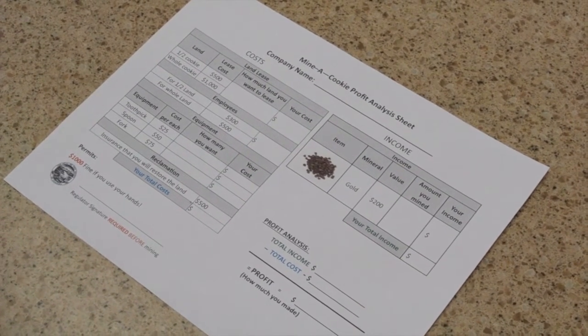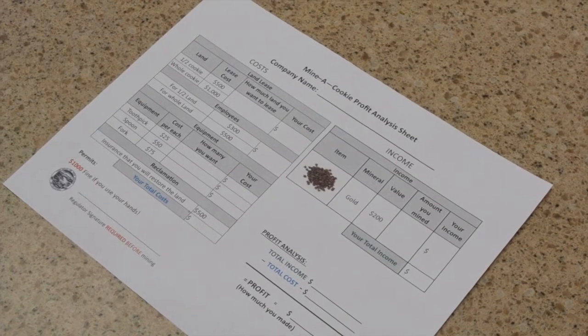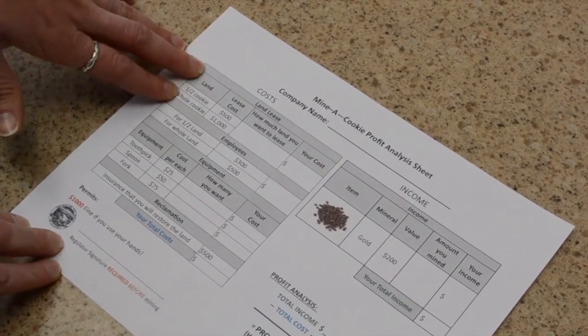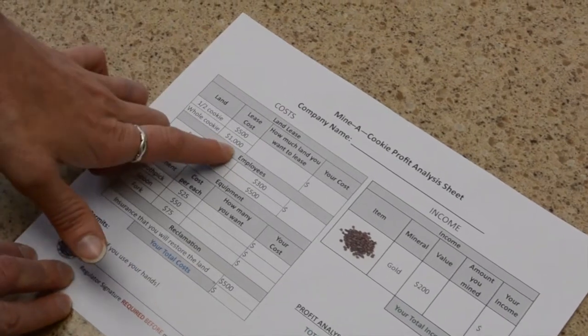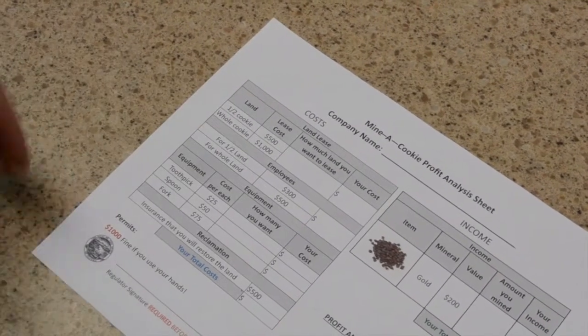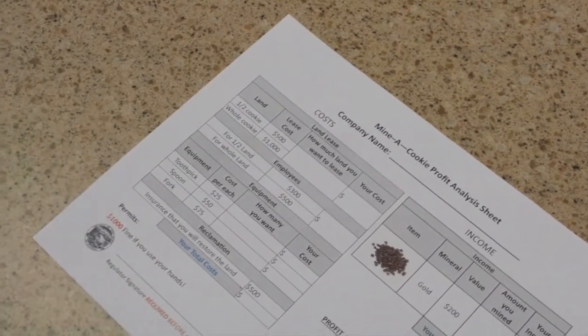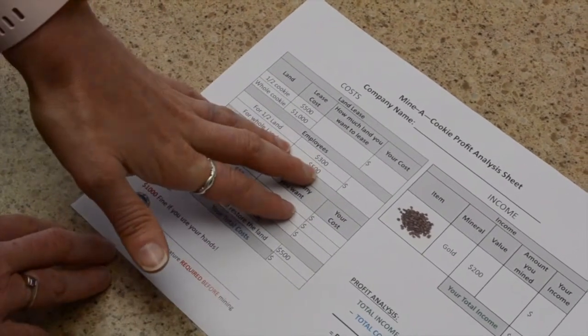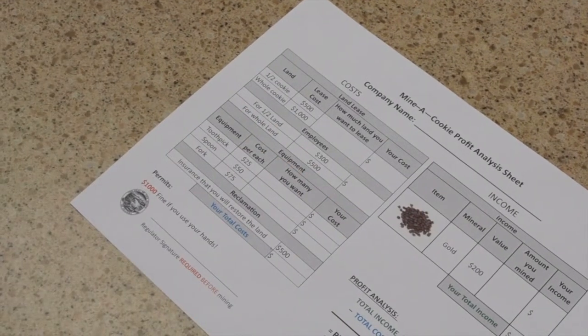Then we talk about land. Obviously they need land to mine on. So with their land, they can either mine half of their cookie or their whole cookie. Obviously it costs more if they want their whole cookie, but it increases their chances of finding more minerals. Then they have to pay employees. So the bigger the project, the more they have to pay their employees.